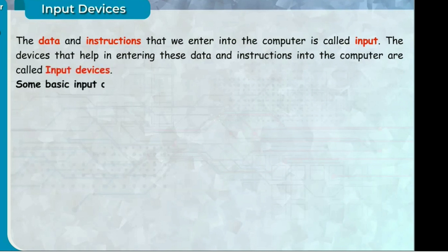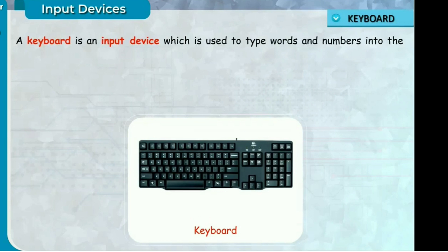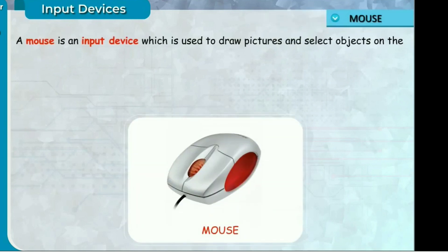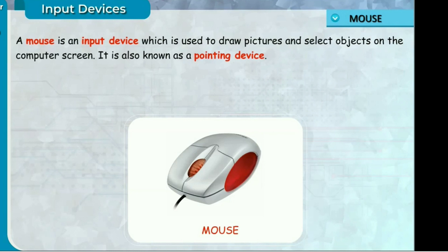Some basic input devices are: Keyboard — a keyboard is an input device which is used to type words and numbers into the computer. Mouse — a mouse is an input device which is used to draw pictures and select objects on the computer screen. It is also known as a pointing device.